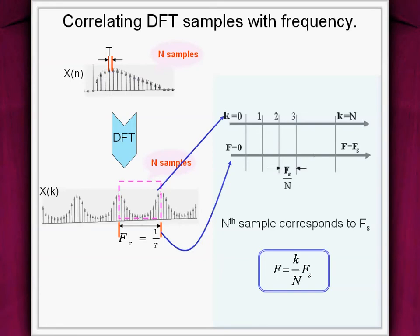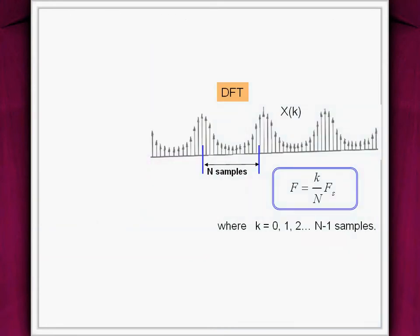Let's interpret this equation at various instances of k. The sample at k = 0 corresponds to the DC component, that is 0 frequency. Similarly, the sample at k = 1 corresponds to analog frequency of fs by N and so on. Thus, discrete frequency samples between 0 to N-1 correspond to frequencies between 0 to sampling frequency.